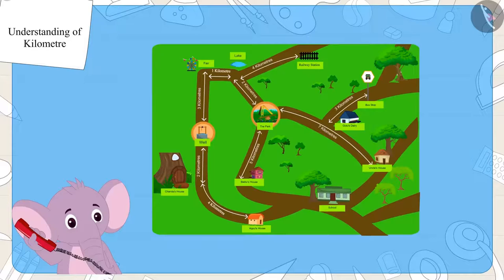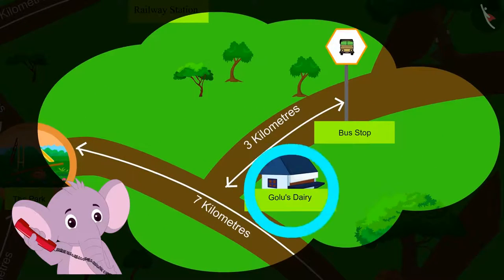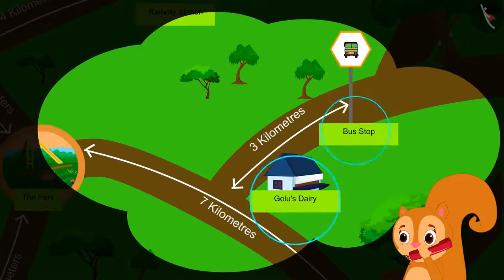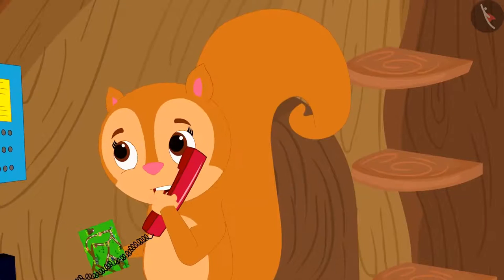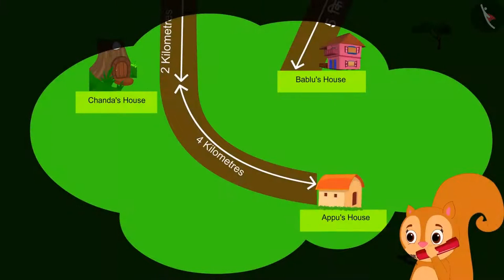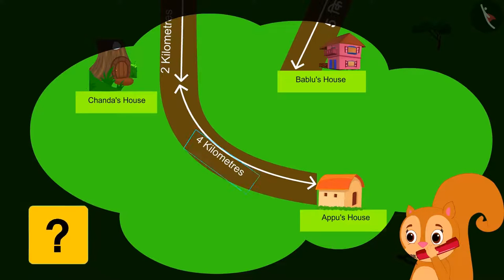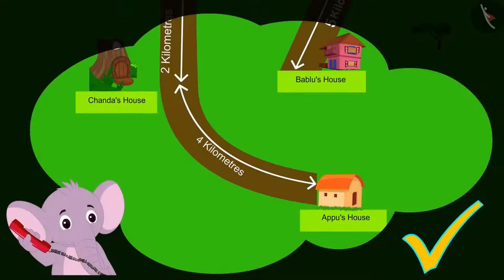Appu told Chanda to look at the map and find Golu's dairy, which is three kilometers away from the bus stop. Chanda quickly noticed the places on her map and saw the distances written between them. She then told Appu that she could see both his house and her house on the map, and that four kilometers is written between them. She asked if her house was four kilometers from his. Appu confirmed that yes, she had read the map correctly.